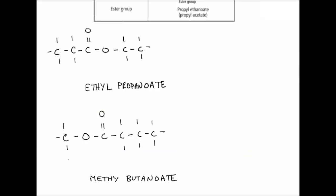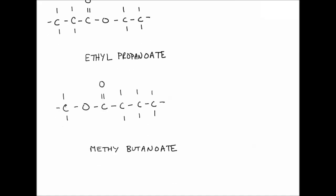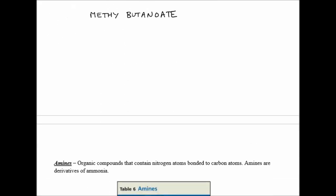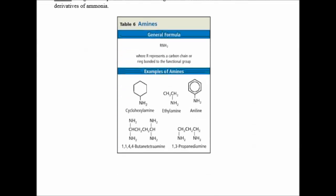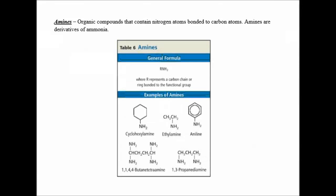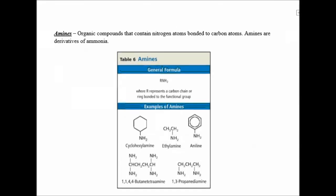So we're going to practice drawing esters in class, but that's the basic way we do it. Turn to page 45 in the notes, and the next thing we're going to look at are the amines. The amines are organic compounds that contain nitrogen atoms bonded to carbon atoms.